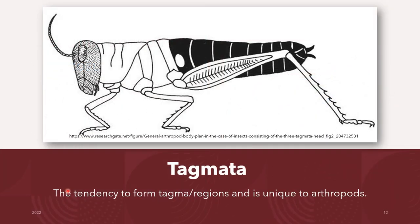A unique feature of animals in the arthropod phylum is the presence of a segmented body and fusion of sets of segments that give rise to functional body regions called the tagma. The tagma may be in the form of the head, the thorax, and the abdomen, or a cephalothorax and abdomen, or a head and the trunk. The diagram shows the general arthropod body plan in the case of insects consisting of the three tagmata.